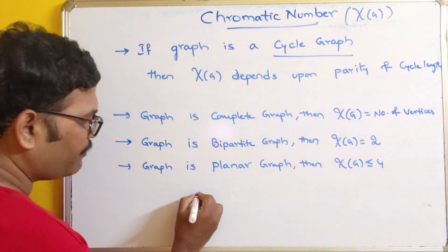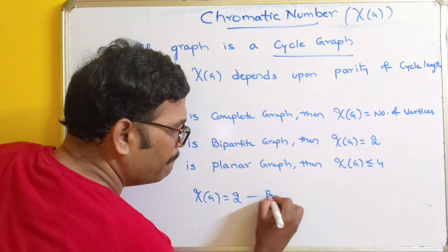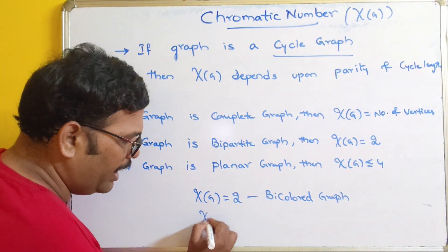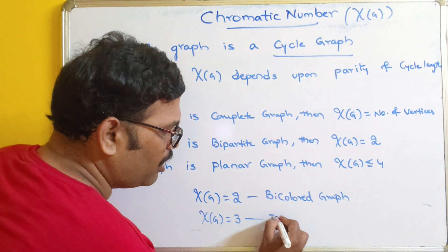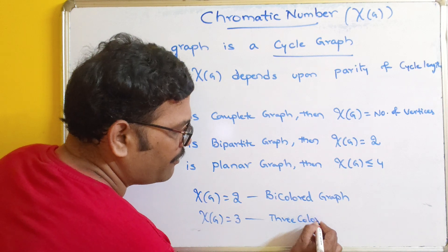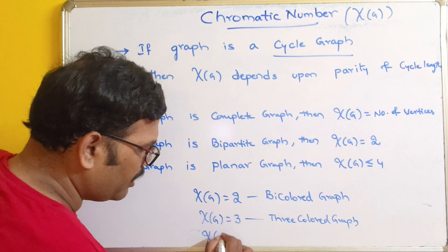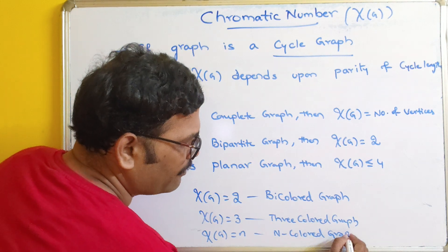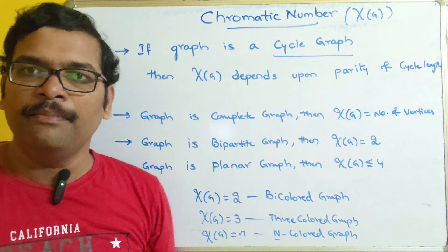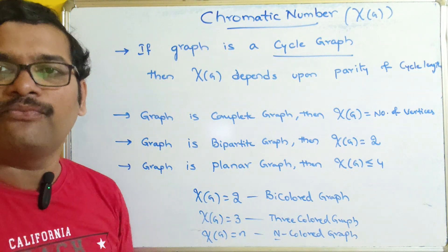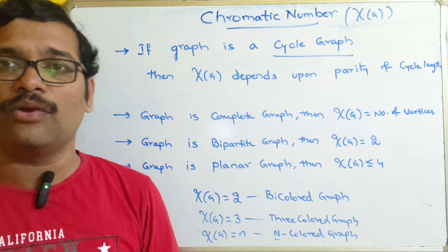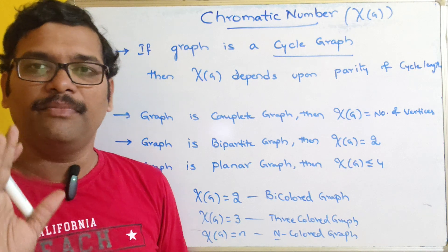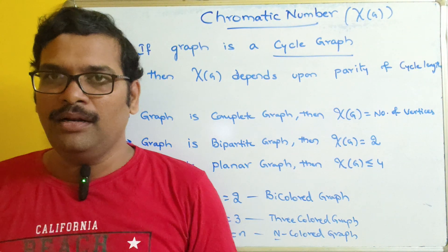If the chromatic number is two, the graph is called a bicolored graph. If the chromatic number is three, it is called a three-colored graph. In general, if the chromatic number is n, it is called an n-colored graph. By observing the graph type, we can determine the minimum number of colors required so that no two adjacent vertices share the same color.